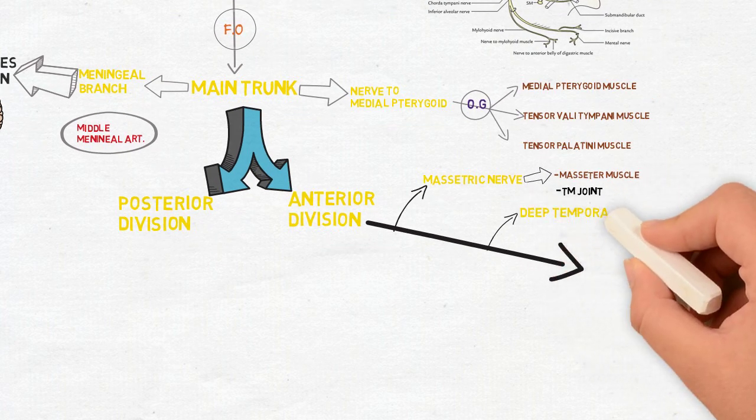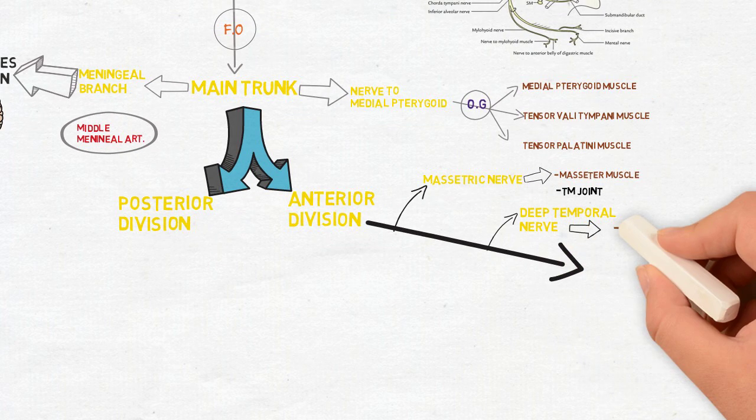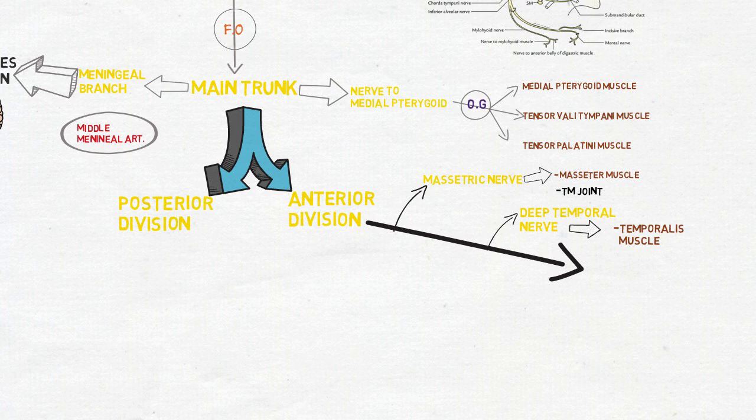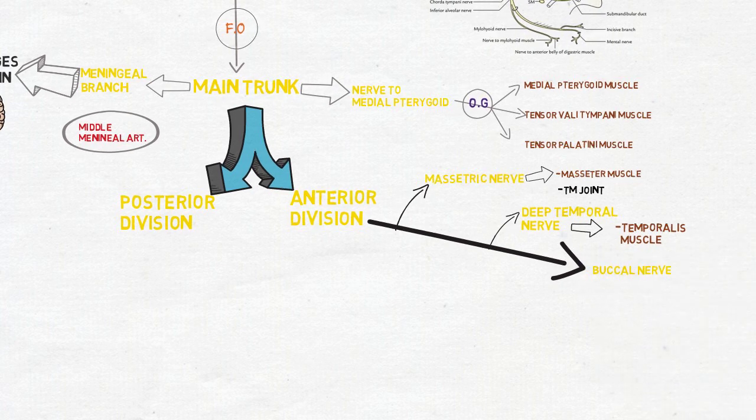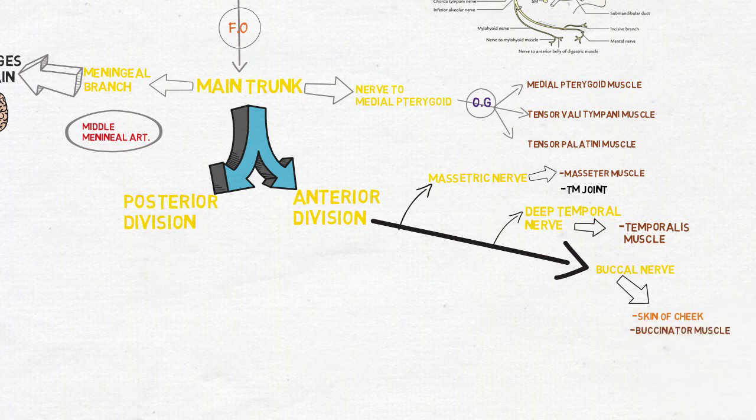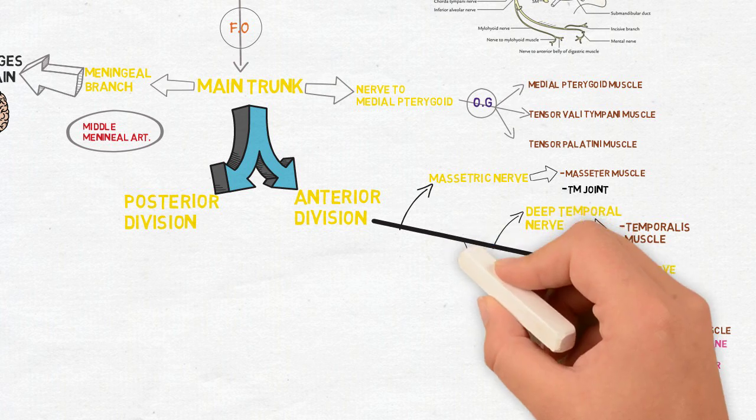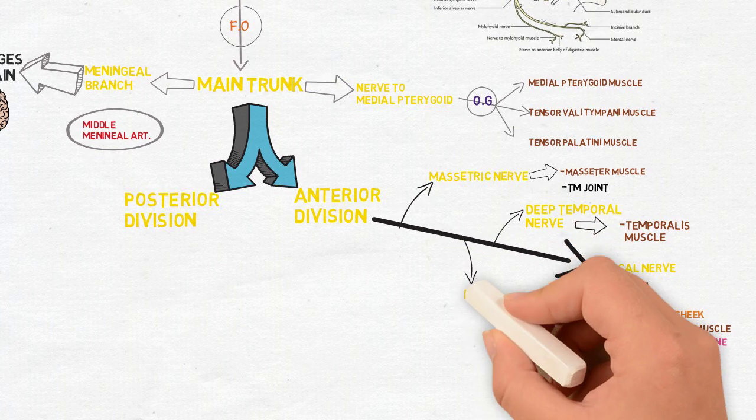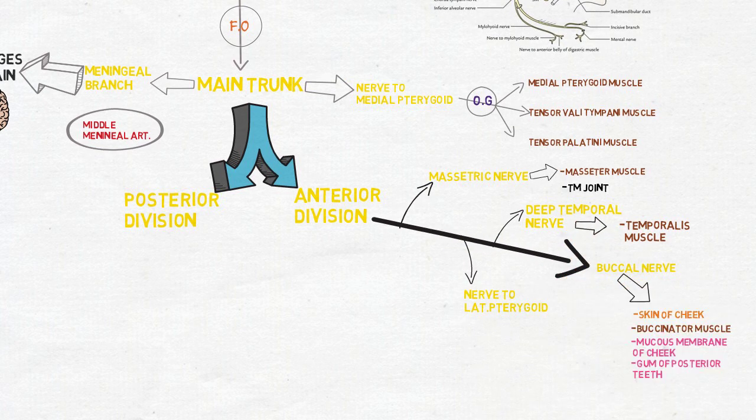The deep temporal nerves supply the temporalis muscle. The buccal nerve supplies the skin of cheek, the buccinator muscle, the mucous membrane of cheek and the gum of posterior teeth. The nerve to lateral pterygoid supplies the lateral pterygoid muscle.